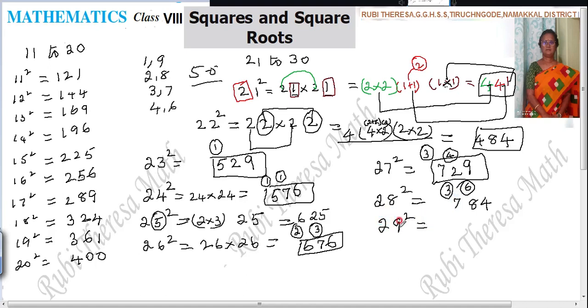Next, 29 square. 9 9's are 81. Reminder 8. 9 plus 9 is 18. Double it into 2. 18 into 2. That is 36. 36 plus 8 is 44. Reminder 4. 2 2's are 4. 4 plus 4 is 8. 841.